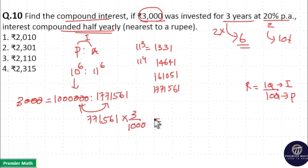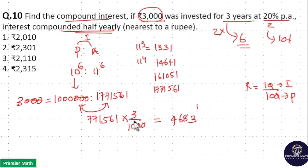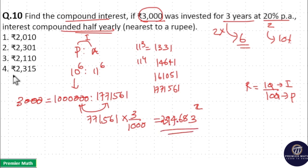That is 3 by 1000 multiplied by 771561. Computing: 3 × 1 = 3, 3 × 6 = 18, 3 × 5 = 15 plus 1 = 16, 3 × 7 = 21 plus 2 = 23, 3 × 7 = 21, divided by 1000. So we get 2314.683, which rounds to approximately 2315 rupees — option 4 is your answer.